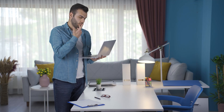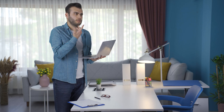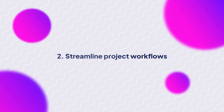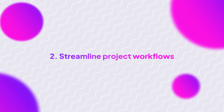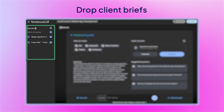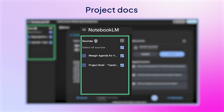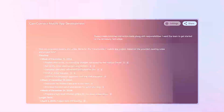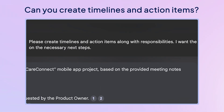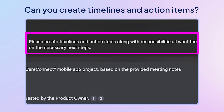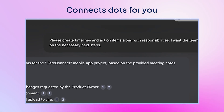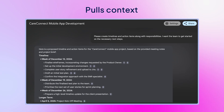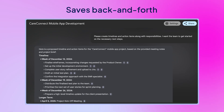Now say you're juggling a few projects. Notebook LM helps to streamline your workflow. Drop in your client briefs, project docs, and even updates. Then simply ask, can you create timelines and action items? It connects the dots for you, pulls context from different files, and saves you a ton of back and forth.